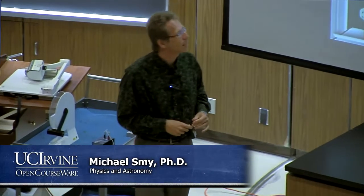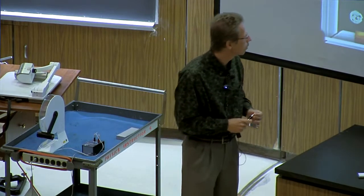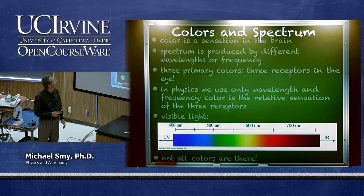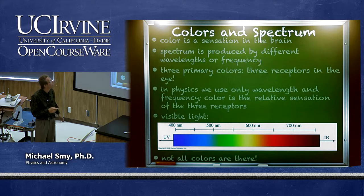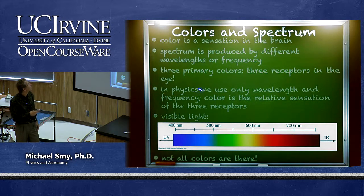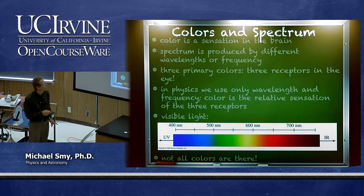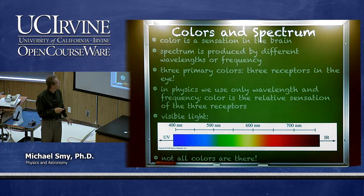Last time we started a discussion about colors and the spectrum, as well as wavelength in media. Color is something that happens in our brain, and therefore it has something to do with how our eyes are built as well as with the physics of light. We have three primary colors because we have three receptors in the eye sensitive to different wavelengths. In physics we use only wavelength and frequency, so color is just the relative sensation of the receptors.